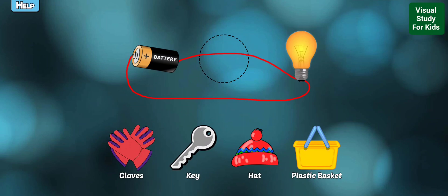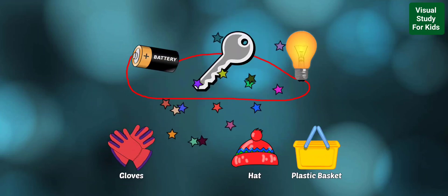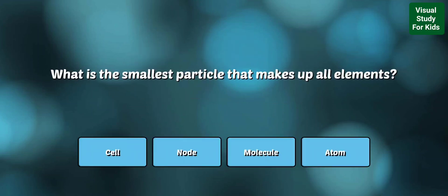Drag the object that is a conductor so the light bulb stays on. Yes, that object is a conductor because it will allow electricity to flow freely, which keeps the light bulb lit.